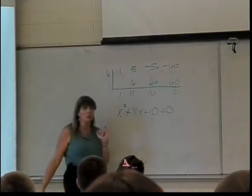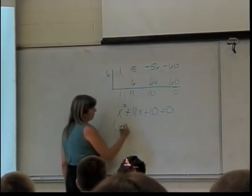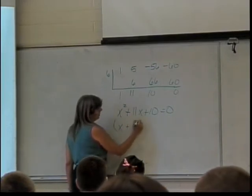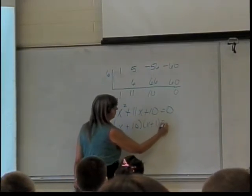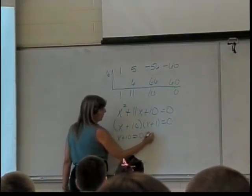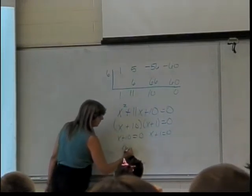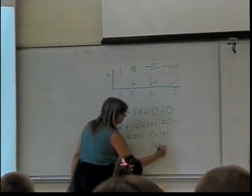x squared plus 11x plus 10. And if I want to find the rest of the zeros, I set it equal to 0 and work through it. This one again factors into x plus 10 times x plus 1 equals 0. That'll give me x equals negative 10 and x equals negative 1.